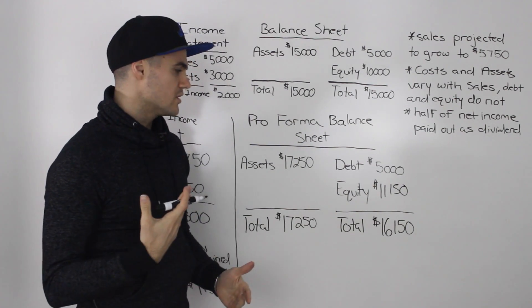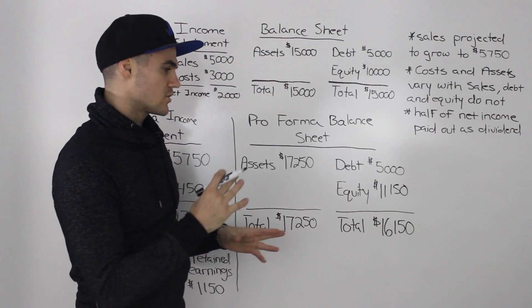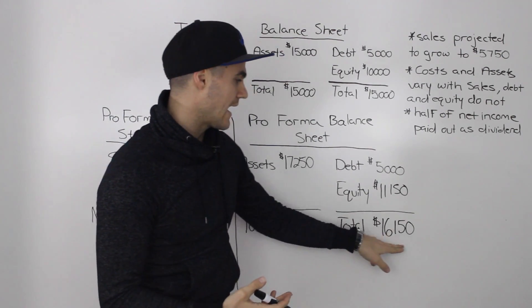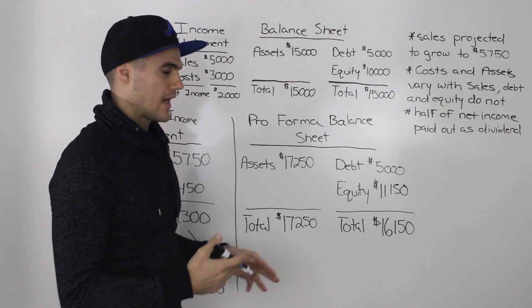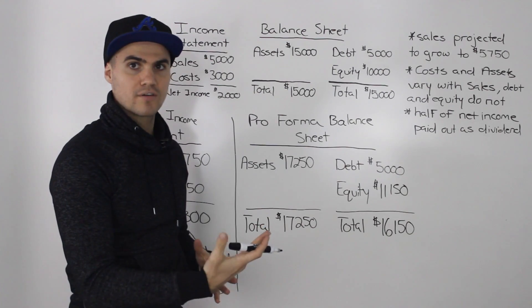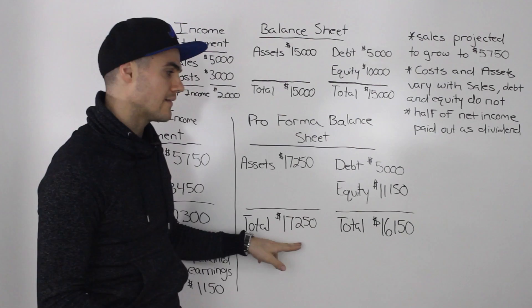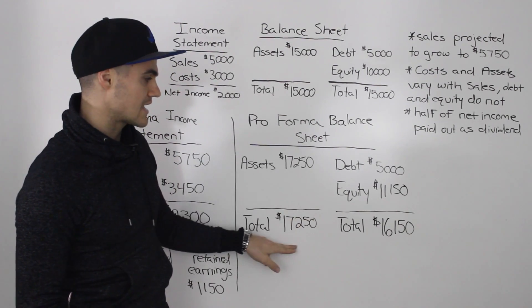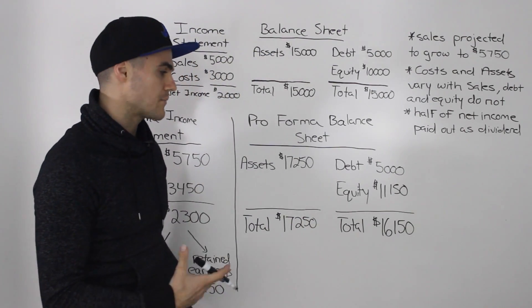And if you notice, compared to the previous example that we did in the previous video, it's sort of the opposite case because previously, we had the right side being greater than the left side. And we had to introduce a new plug variable of dividends and pay some of that equity out to bring it down. So both sides would balance. But in this case, the left side, the asset side is greater than the debt and equity side. So what happens here?